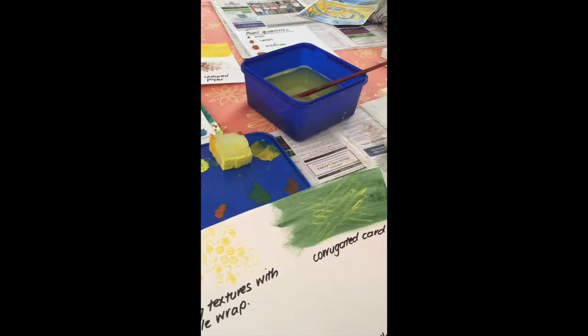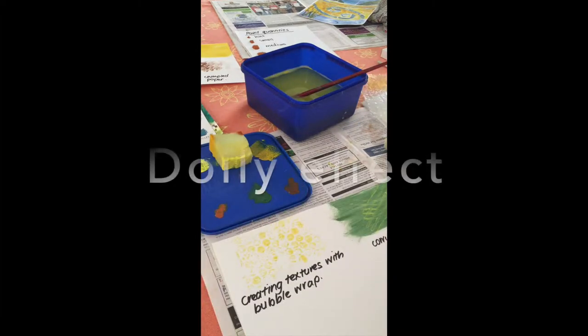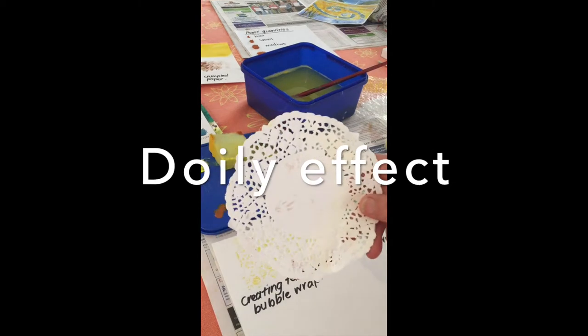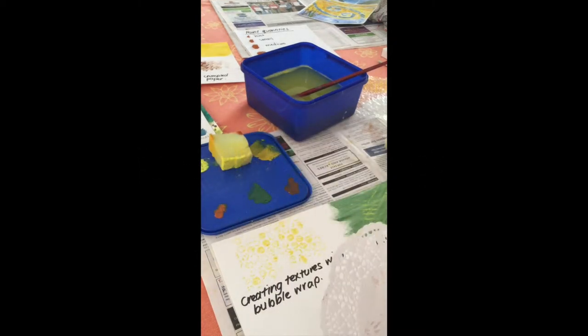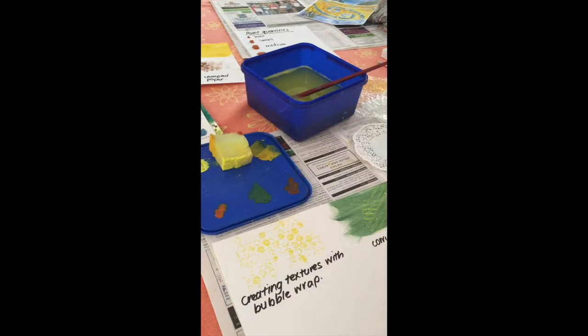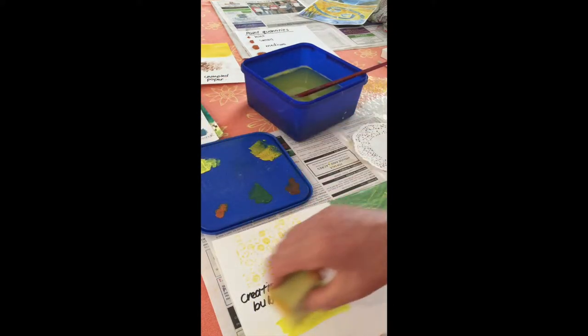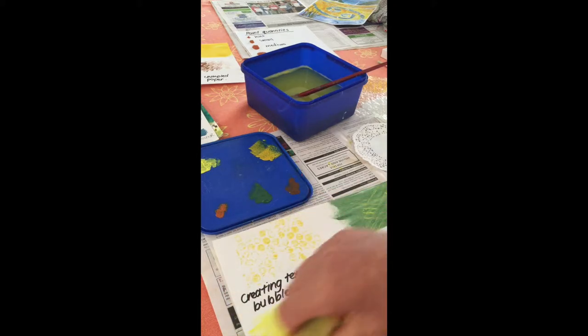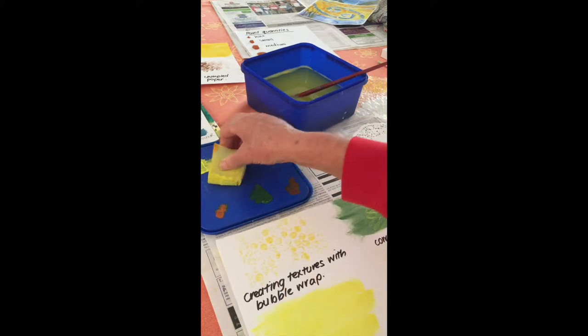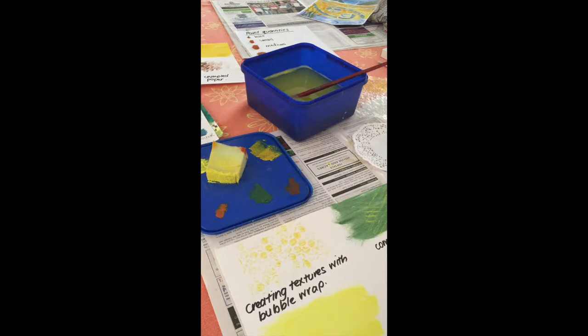You are going to be creating some sand effects with the doily. So first thing you need to do is to put some of your yellow down, so we'll put the yellow down here. This is the lemon yellow from the paint set, and then we are going to need a little bit of white.